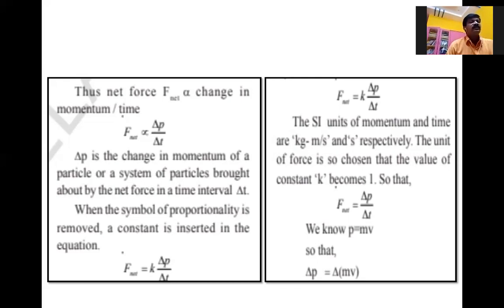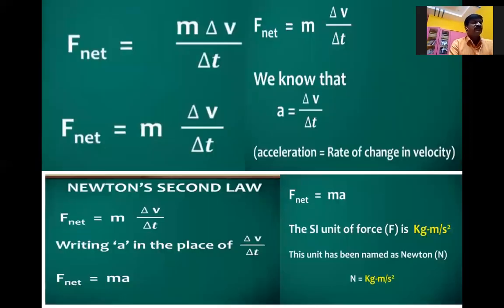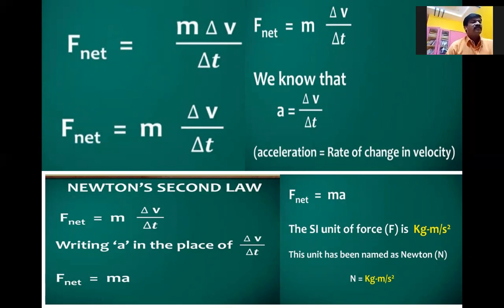Here, ΔP can be written as mv − mu. Momentum means mass into velocity — final velocity minus initial velocity gives the change of velocity. So ΔP = mv − mu, and F_net = m × Δv/Δt. We know the rate of change of velocity is acceleration: a = Δv/Δt. So F_net = ma. The force F equals ma.